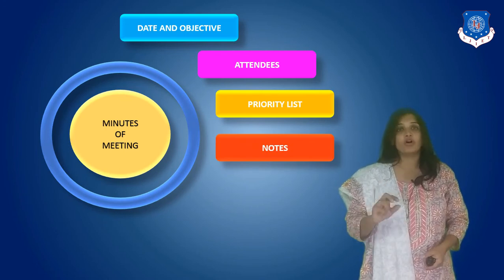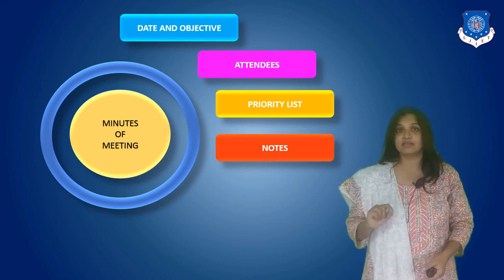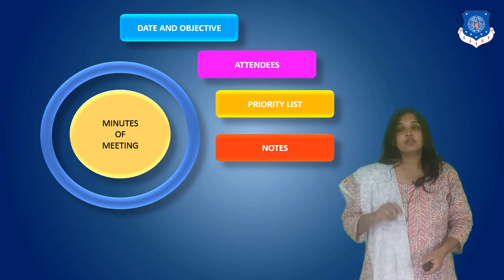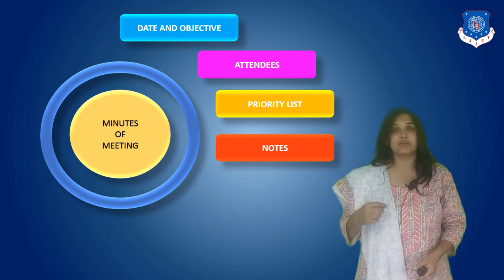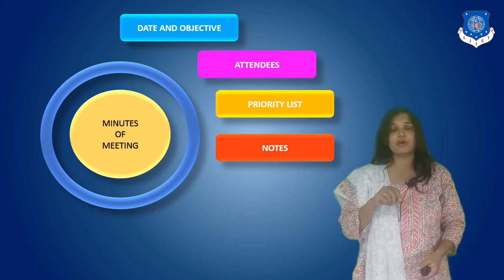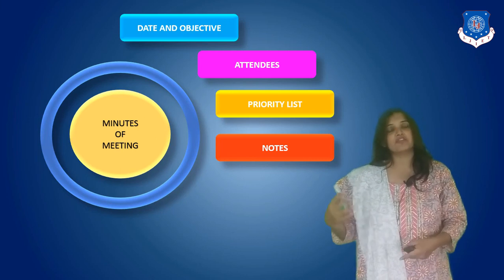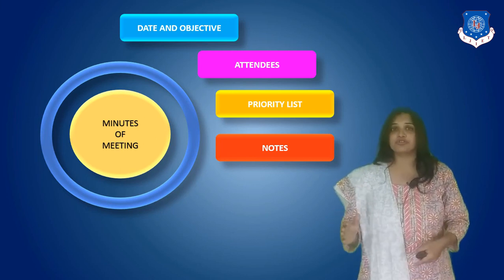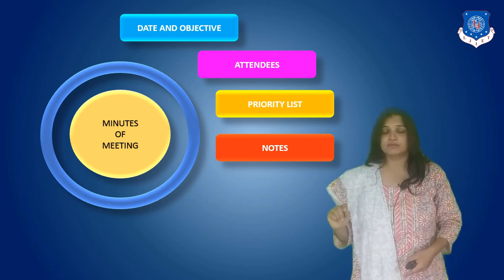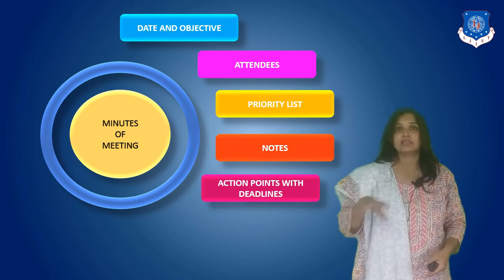What you have to write down is notes — noting down what is being discussed. When you note down, take care about one thing: don't write every sentence that a person speaks word for word. Only write a few words or some points from which one can understand. Later on the minutes of meeting can be written in detail, but at the time during the meeting you must always write down in small points.